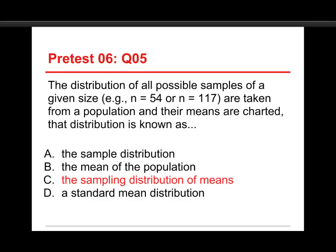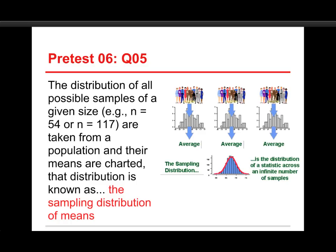Here's again how it works. The sampling distribution of means is made by taking several samples — actually an infinite number of samples — getting their averages, their means, and then putting those into a new distribution. That's the sampling distribution of means, because it's made through a process of sampling. Anyhow, that's it for the pre-test, and we'll see you for the practice tests.